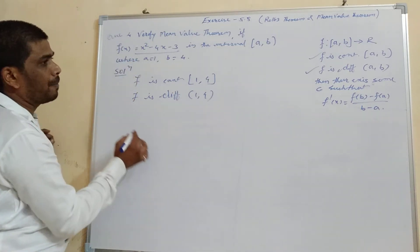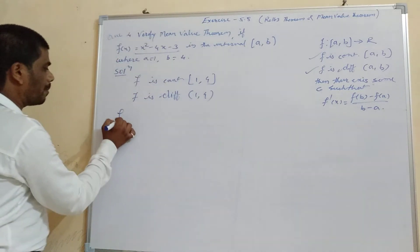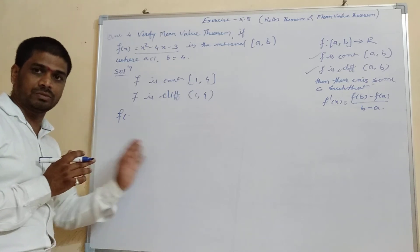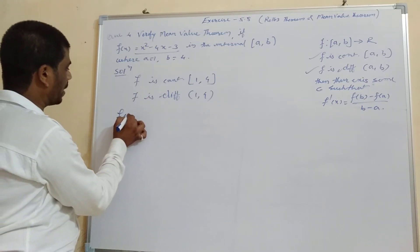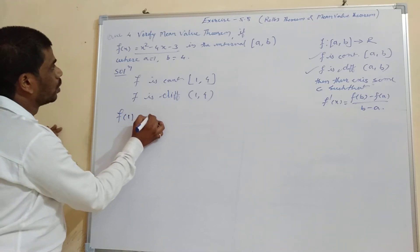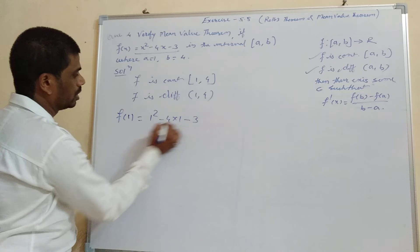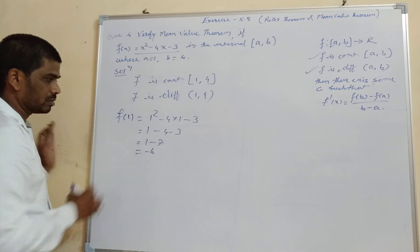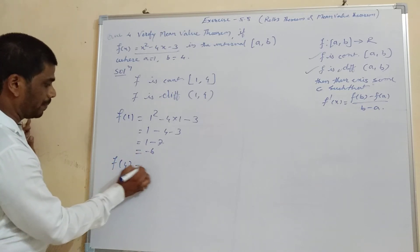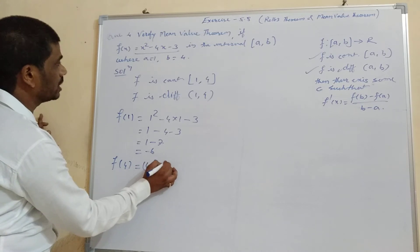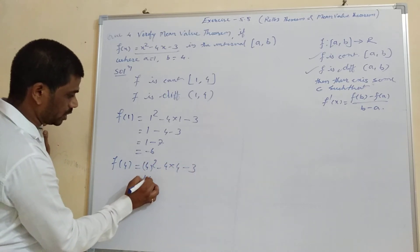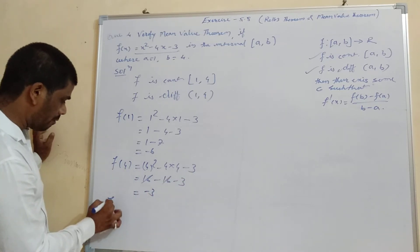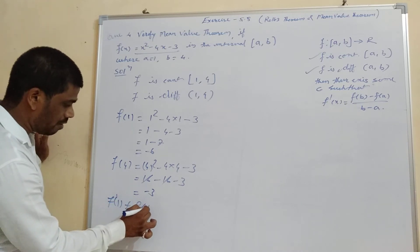Now we will find f of a and f of b. f of a, that is f of 1, will be 1 squared minus 4 into 1 minus 3, which is 1 minus 4 minus 3, that is 1 minus 7, equal to minus 6. And f of b, that is f of 4, comes out to minus 3. So f of 1 is not equal to f of 4.